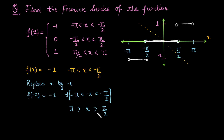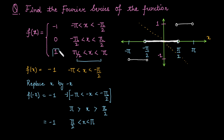After rearranging, the minimum value of x is pi by 2 and the maximum is pi, so the interval becomes pi by 2 to pi, with function value minus 1. But from pi by 2 to pi the original function value is 1, so we can write this as minus of f(x). We started with f(−x) and obtained −f(x), so the function is odd.